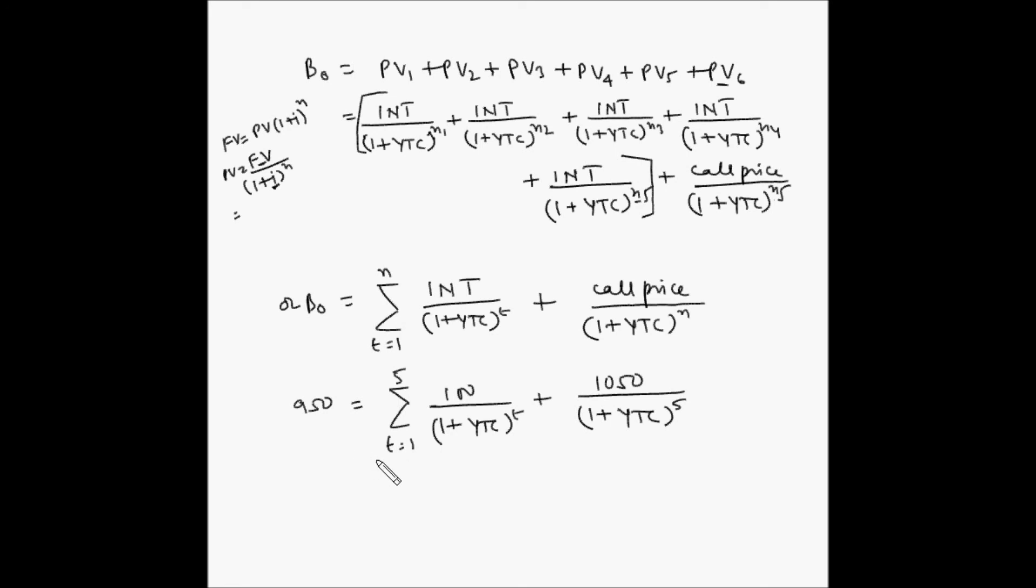Basically this calculation that is yield to call is pretty much the same as the calculation for yield to maturity. The only difference is that in yield to maturity the tenure is till the end of the maturity period, whereas in yield to call the tenure is till the point when the bond is going to be called back.